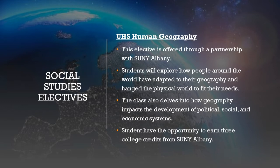UHS Human Geography is another course being offered for the first time in conjunction with SUNY Albany. It is a full-year elective course where students will explore how geography shapes the world around them — how people adapt to their environment, how they change their environment, and how this influences political, social, and economic systems. You are eligible for three college credits from SUNY Albany upon successful completion of this course.